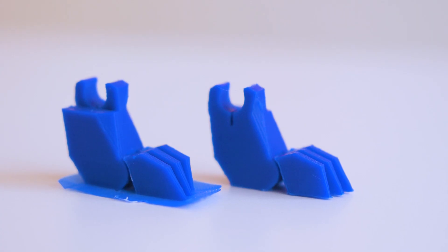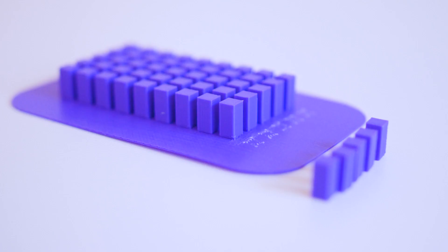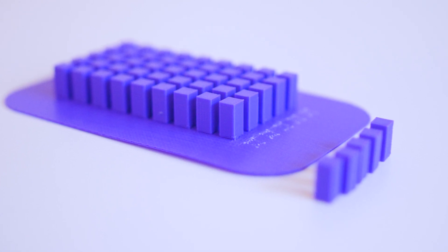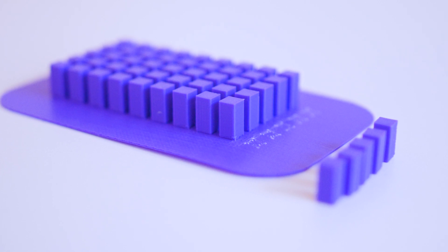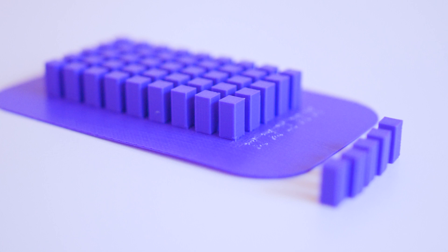For example, a brim support adds layers around the base of the model to help it adhere to the print bed. A raft support also helps in adhering to the print bed and is useful when the model has a small initial footprint and a larger size is layered on top. It uses more material typically and therefore can take longer to print.